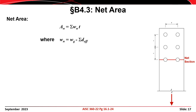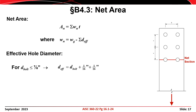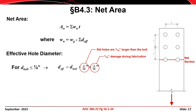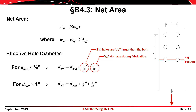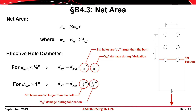Written algebraically, the net area is taken as the sum of wn times t, where wn is the net width of each element and t is the element thickness. The net width of each element is taken as the gross width wg minus the sum of the effective hole diameters d-effective. For bolts up to and including 7/8 inch, the effective diameter of a standard hole equals the bolt diameter plus 1/16 inch (nominal hole diameter) plus an additional 1/16 inch for fabrication damage. For bolts 1 inch and larger, it equals the bolt diameter plus 1/8 inch plus an additional 1/16 inch.